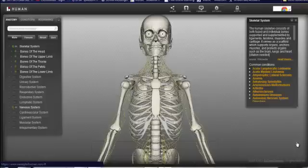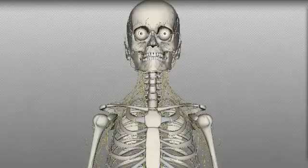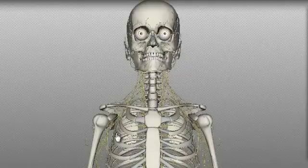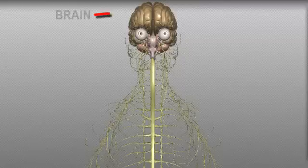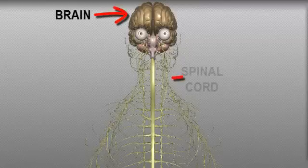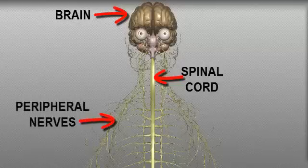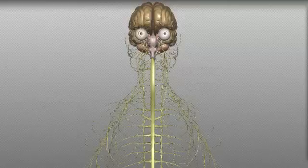Here we are taking a look at a skeleton and as you can see, we have some yellow string-like structures coming out of the skeleton. Those yellow string-like structures are part of the nervous system. If we were to remove the skeleton from the picture, we would have our nervous system left over. Our nervous system actually has three main components: we have the brain up here, attached to the brain we have the spinal cord, and attached to the spinal cord we have all the peripheral nerves that run out to all the different muscles and organs and glands in our body to carry out specific actions.